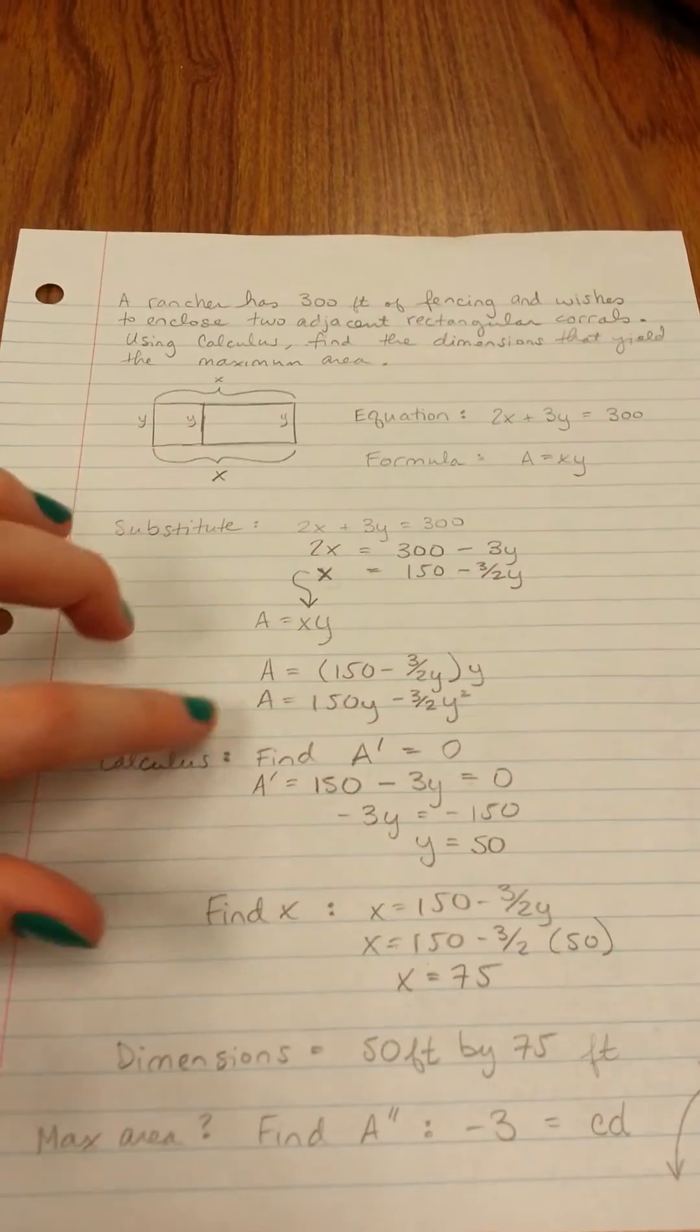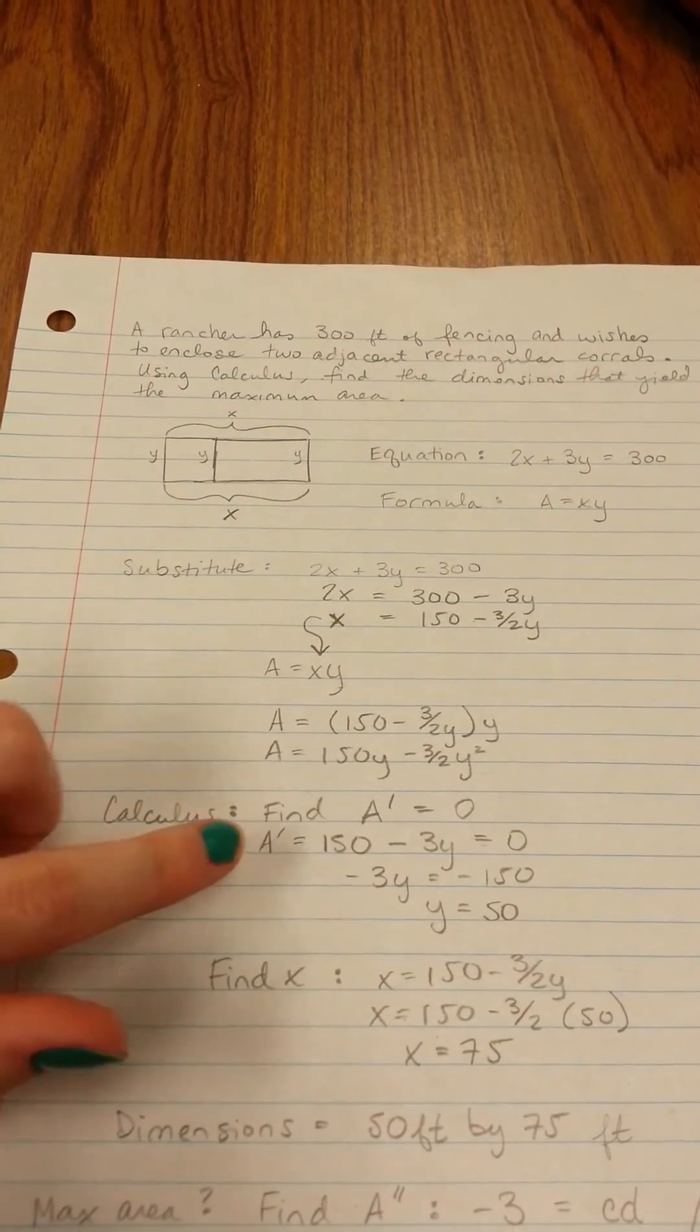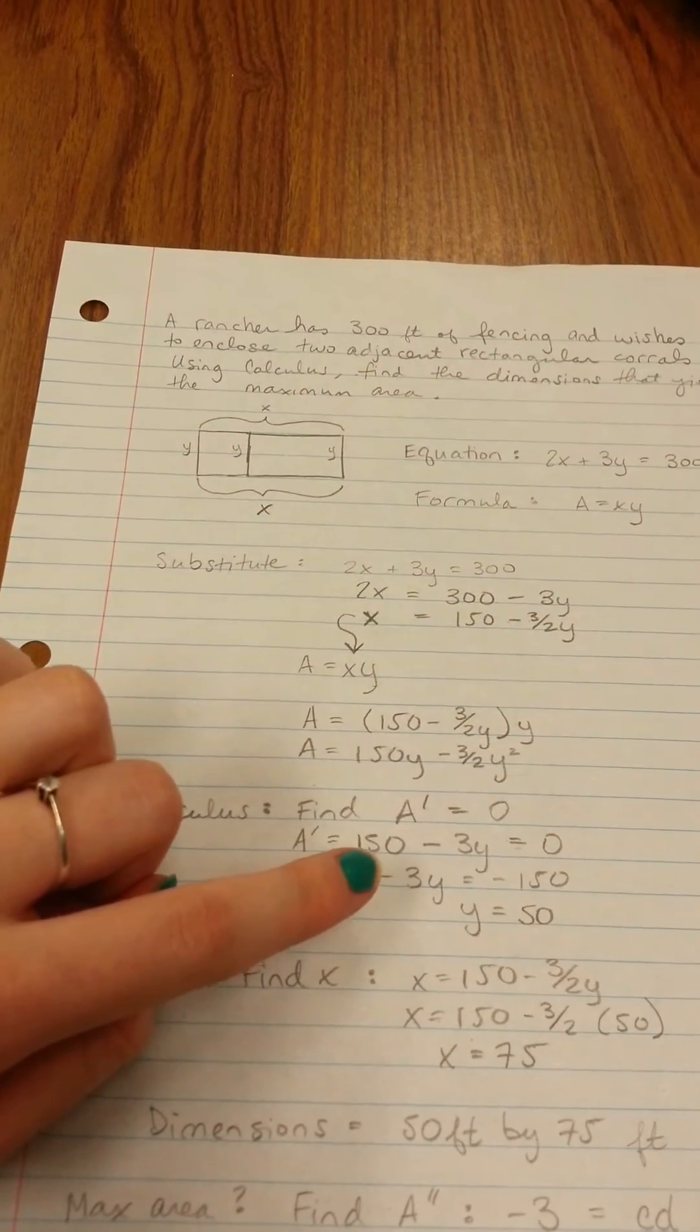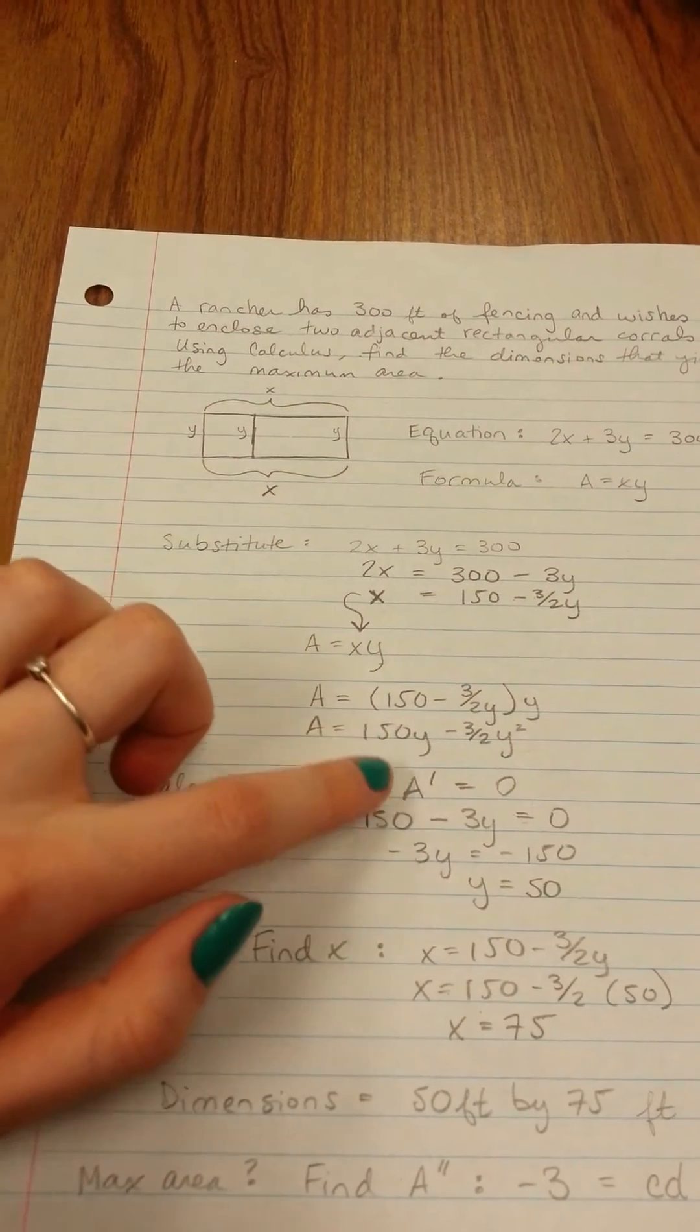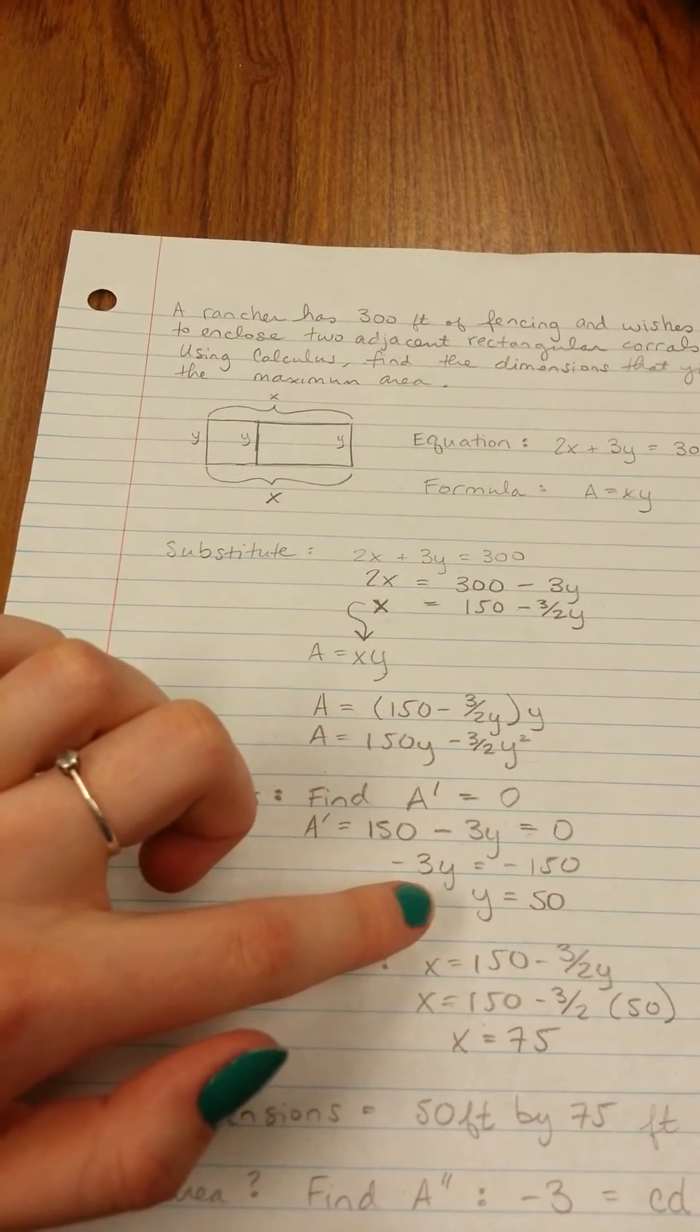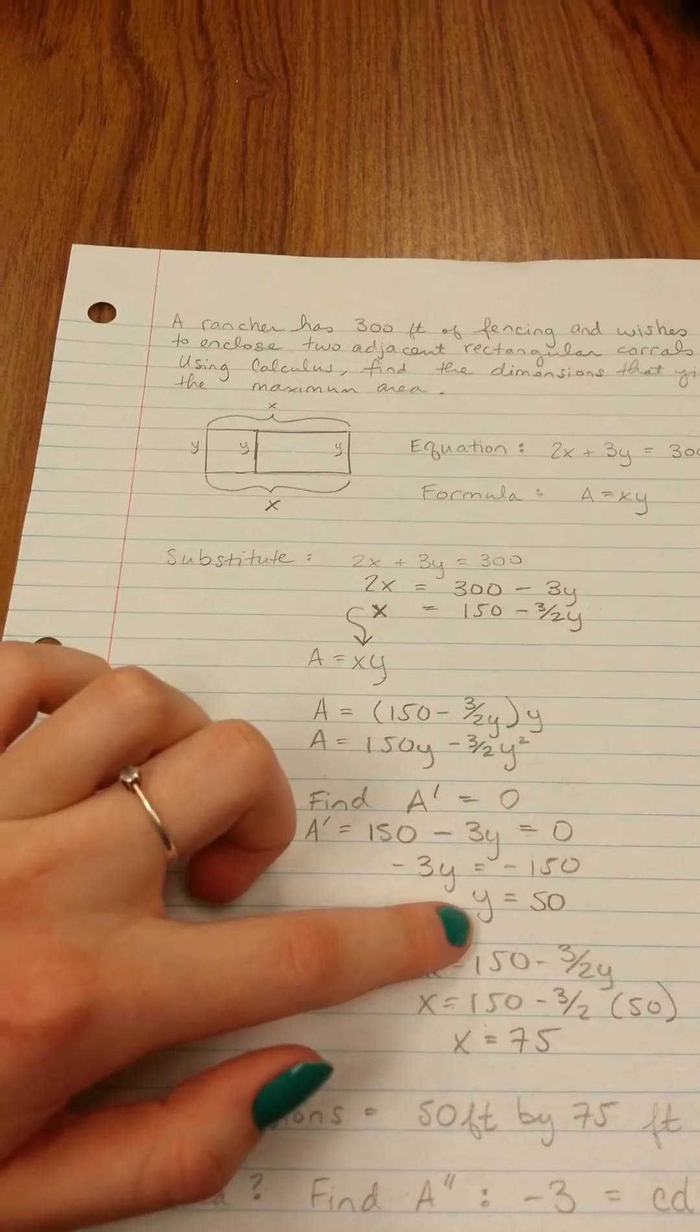The next step is the calculus portion, where we have to find the derivative of A, and then set that equal to zero. So our derivative of A is going to be 150 minus 3Y equals zero. Then we solve to get our Y, which is 50.